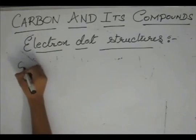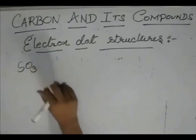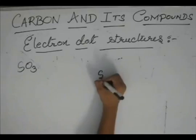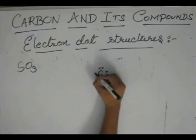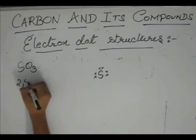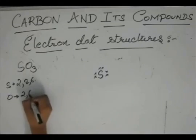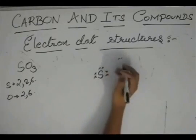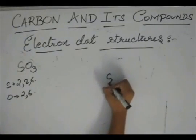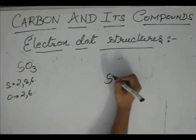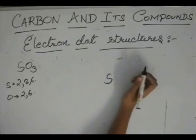Now we have SO3. In SO3, S has 6 electrons — its configuration is 2, 8, 6. And O is 2, 6. Before drawing the electron dot structure, let us see the structure of SO3. S has 6 valence electrons, so 6 valencies, meaning 6 bonds.